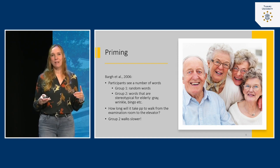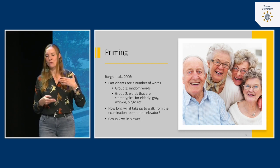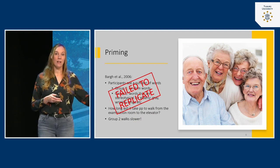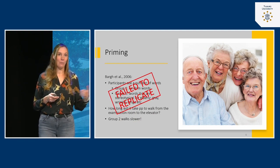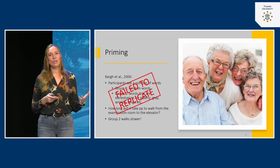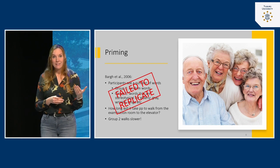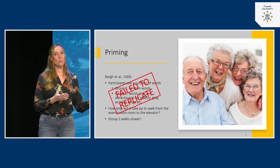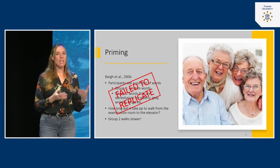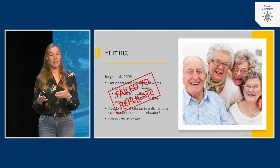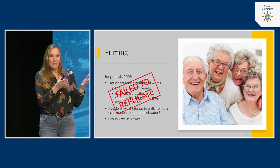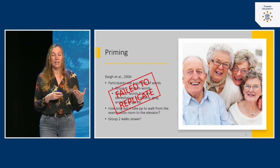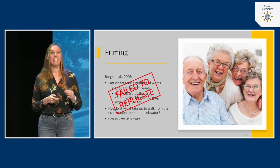This study had a huge impact in the field — it was very clever and widely discussed. However, recently we found out it's not as solid as Bargh thought, because this study failed to replicate. It was repeated with a bigger sample size and better methods, and the results were not found again. This does not mean priming isn't real — it definitely is — but in this specific context, it doesn't work the way Bargh thought.